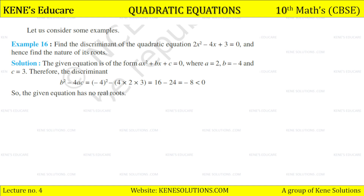Let us consider an example: find the discriminant of the quadratic equation 2x²−4x+3 = 0 and hence find the nature of its roots. The equation is of the form ax²+bx+c = 0 where a = 2, b = −4, and c = 3. Therefore the discriminant b²−4ac = (−4)²− 4×2×3 = 16 − 24 = −8, which is less than 0. Hence the given equation has no real roots.